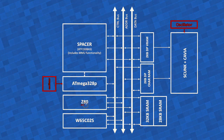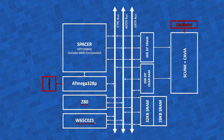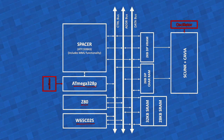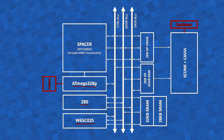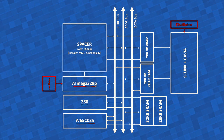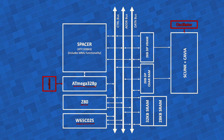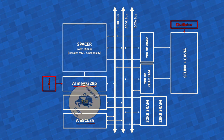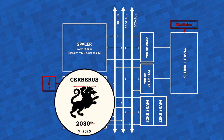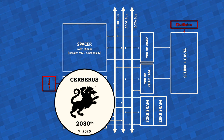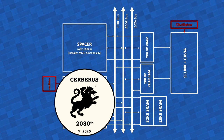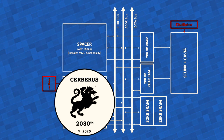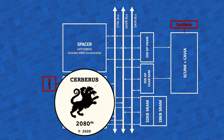The Z80 is a true CPU, the 6502 is a true CPU, and although the ATmega is not a CPU — it's a much simpler serial controller — it does have a processor inside. So if we count in terms of processors, this is a three-processor architecture. That's why I'm calling it Cerberus — the mythical three-headed dog that guarded the entrance of Hades, the underworld in Greek mythology.